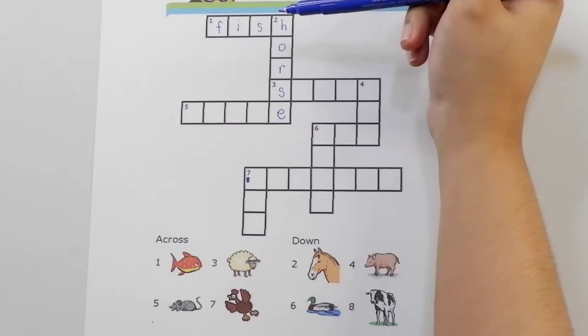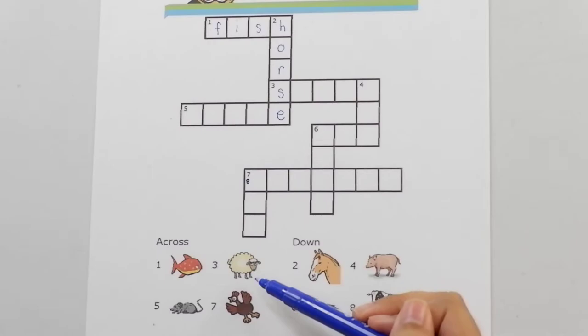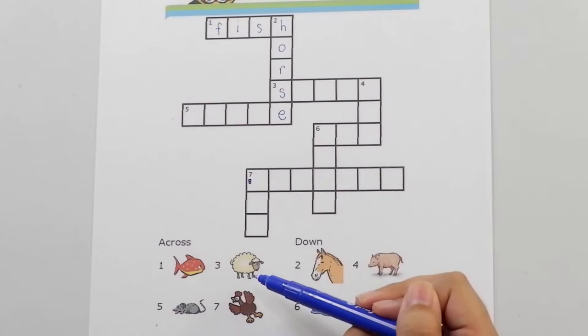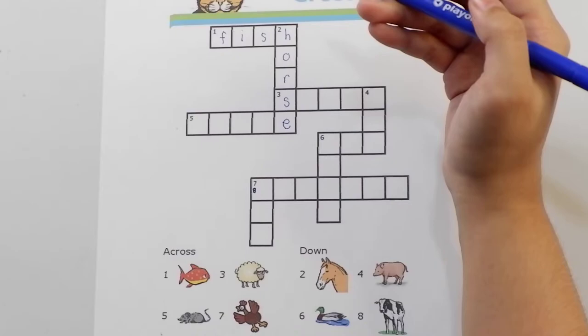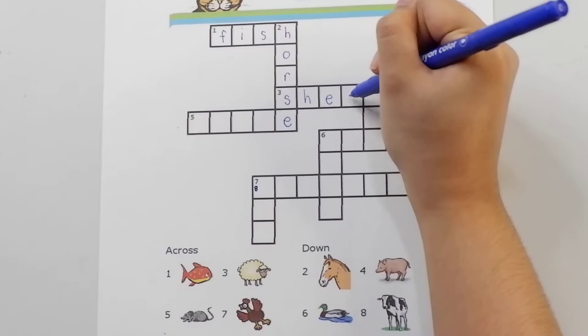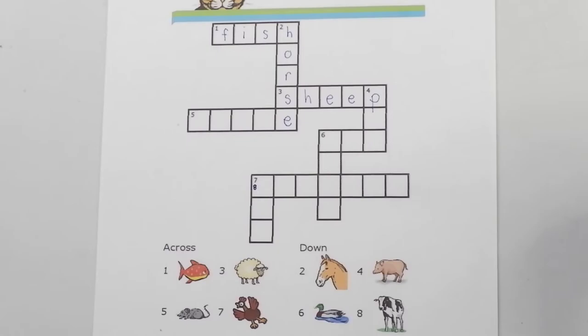Now, chameleons, let's go to number three. Number three is under across. This means we have to write the answer horizontally again. Let's go to box number three. Number three is a sheep. S-H-E-E-P for sheep.